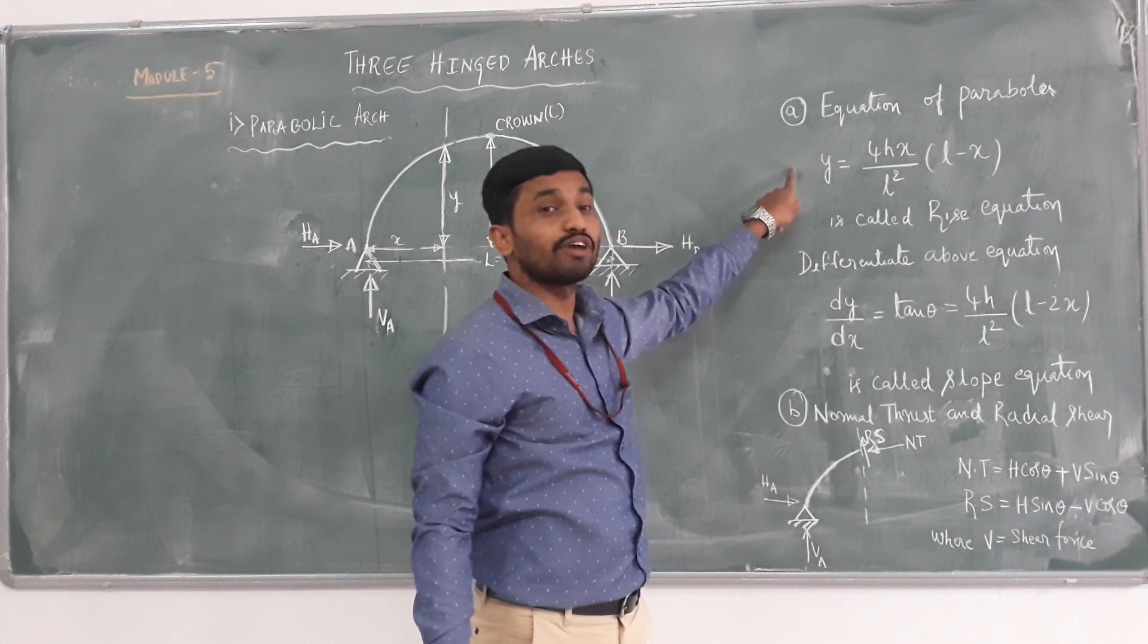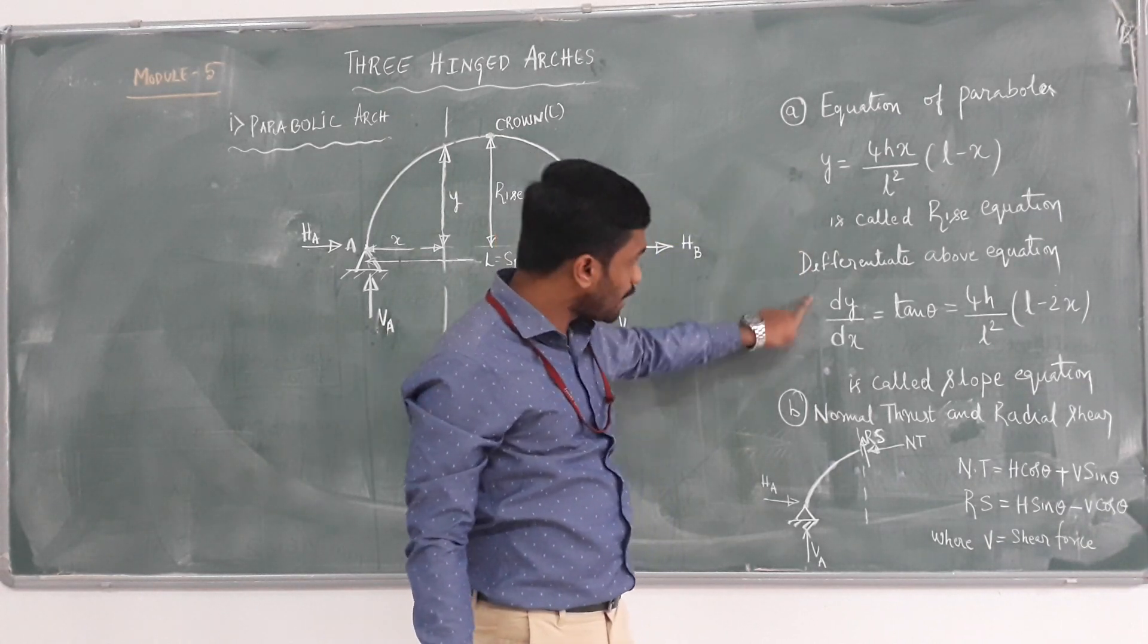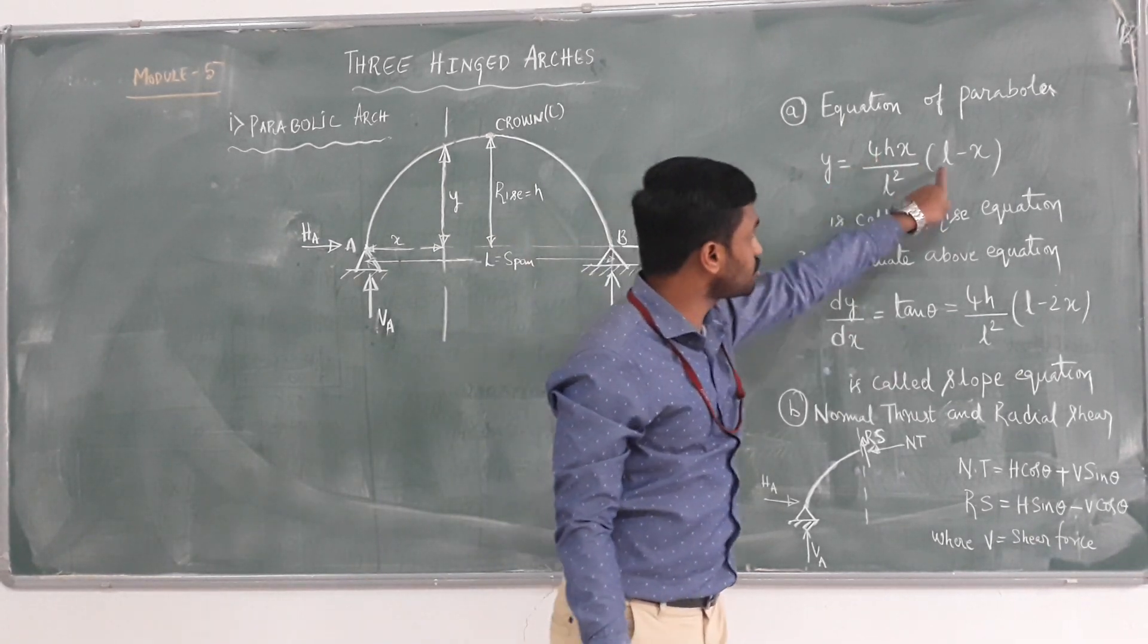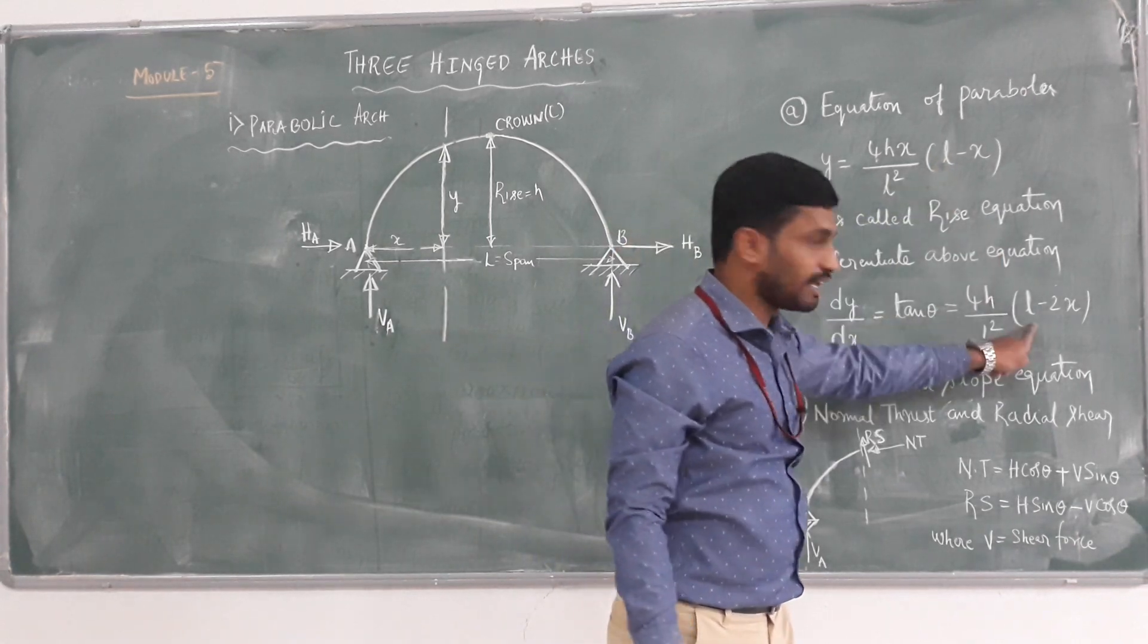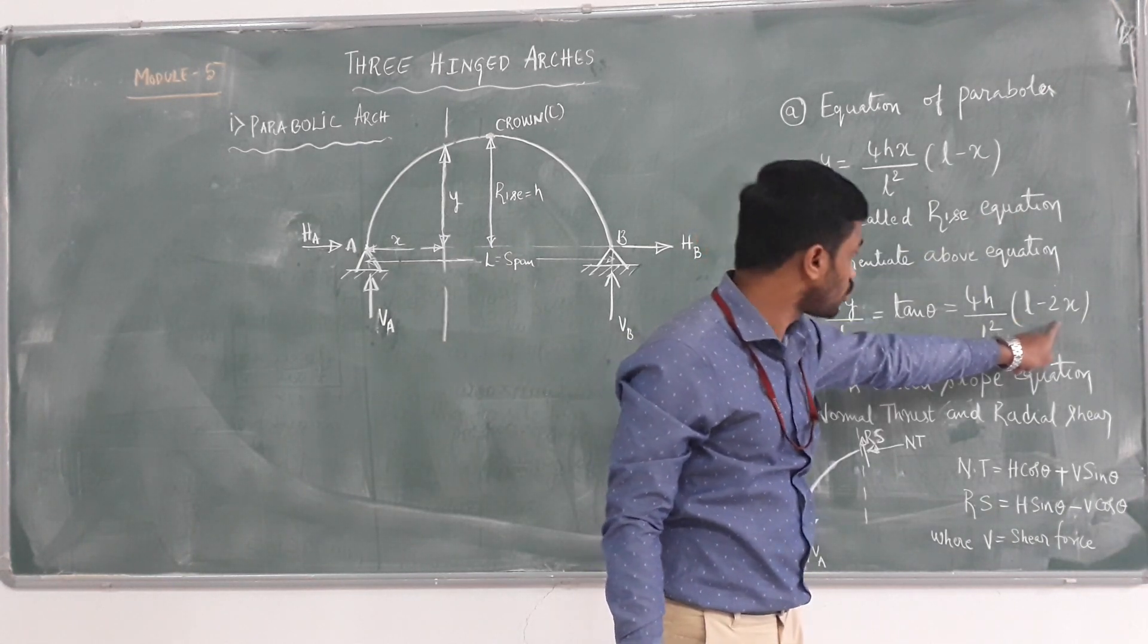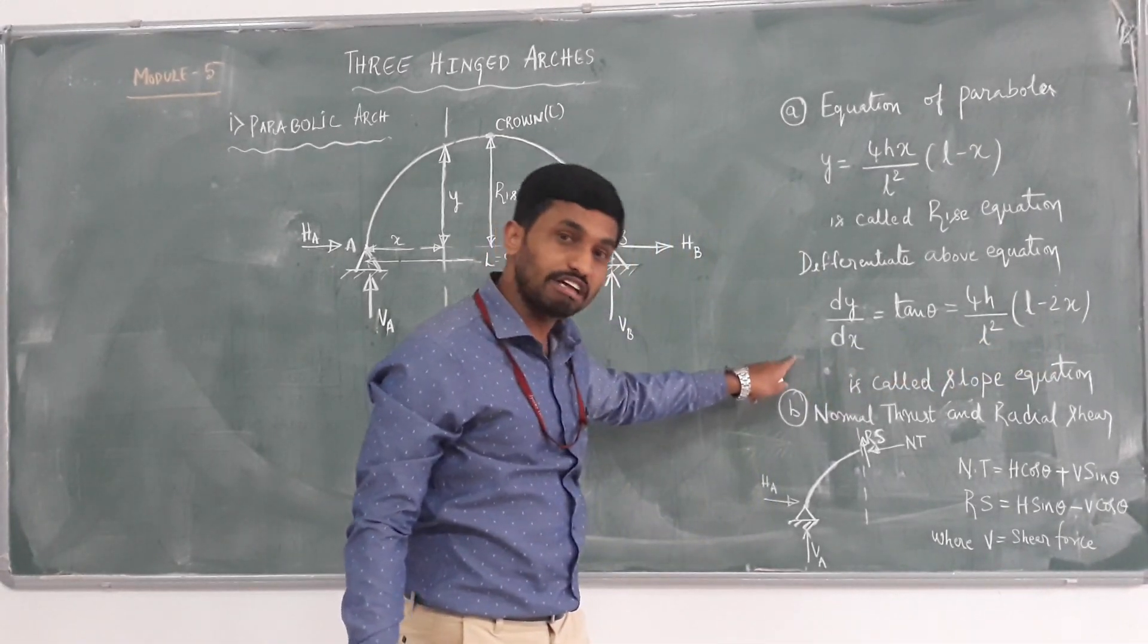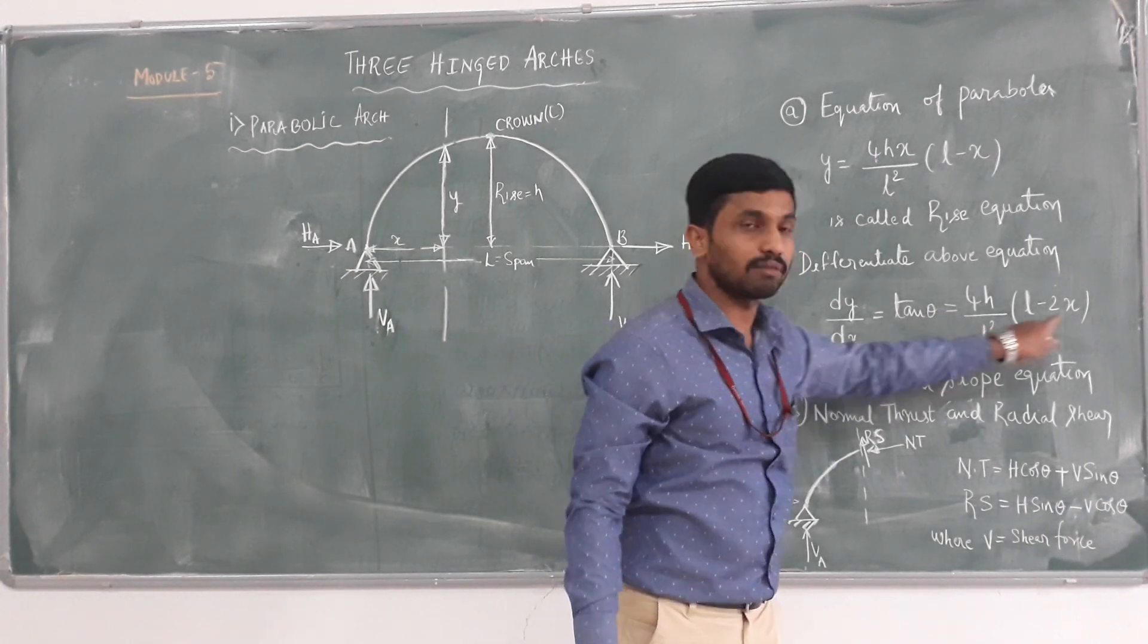If you differentiate this equation, we are getting slope. If you differentiate dy by dx, then we are getting slope, tan theta. So 4H by L square into LX minus X square. If you differentiate, we are getting L, then X square differentiation is 2X. So this is the differential equation. We are getting slope equation: 4H by L square into L minus 2X.